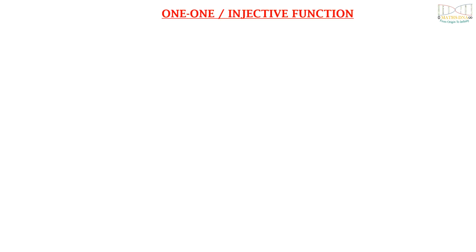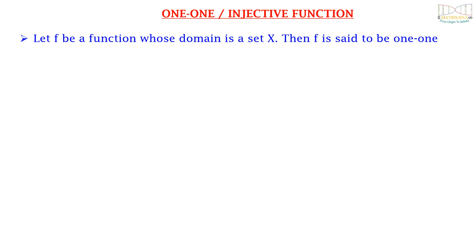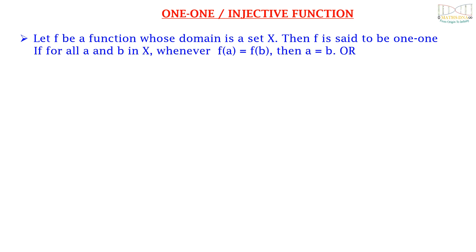1-1 or injective function: let f be a function whose domain set is X. Then f is said to be 1-1 if for all a and b in X, whenever f(a) is equal to f(b), then a is equal to b. Or equivalently, if a is not equal to b, then f(a) is not equal to f(b).